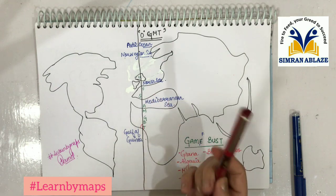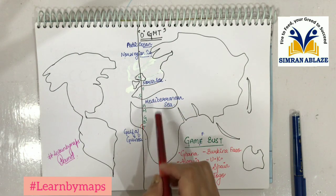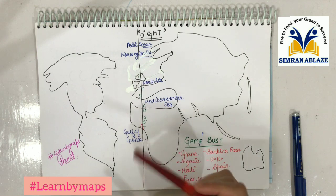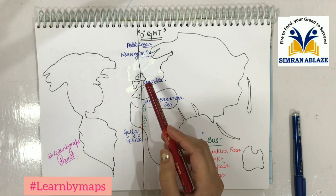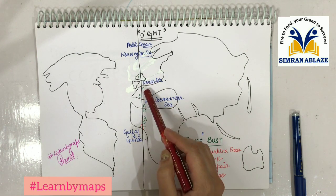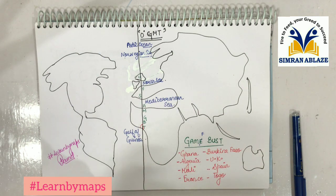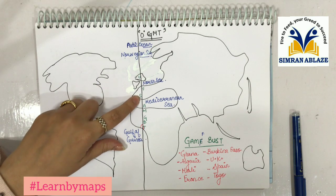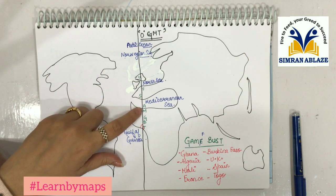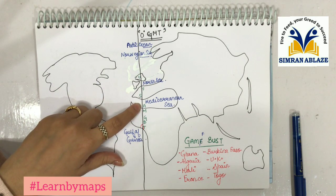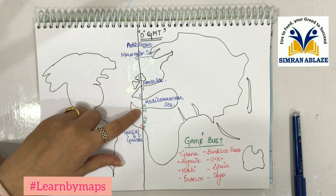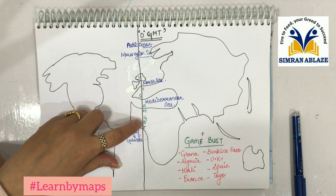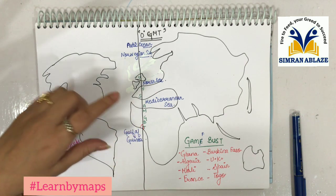If you want to remember these countries from north to south or south to north, you can use this mnemonic: UFO — Unidentified Flying Object — where U is UK, F is France, S is Spain, then AM for Algeria and Mali. From GMT: G is Ghana, B is Burkina Faso, and T is Togo.